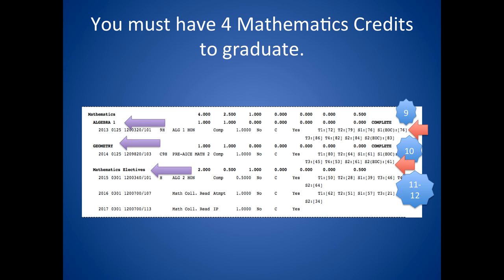You must have four mathematics credits to graduate. It must include Algebra 1, typically taken in 9th grade, and Geometry, often taken in 10th grade. You must also have two math elective credits, typically taken in your junior and senior years. Because Algebra 1 and Geometry have EOC exams attached to them, you will see where those tests have been averaged into the grades for each semester. Remember, these EOC exams count for 30% of your grade in those classes.